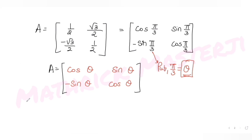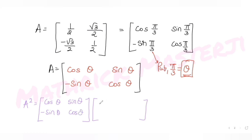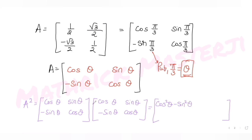Now I can find A² by multiplying the matrix by itself: [[cos θ, sin θ], [-sin θ, cos θ]] times [[cos θ, sin θ], [-sin θ, cos θ]]. The top-left element gives cos²θ - sin²θ, the top-right gives 2 sin θ cos θ, the bottom-left gives -2 sin θ cos θ, and the bottom-right gives cos²θ - sin²θ.